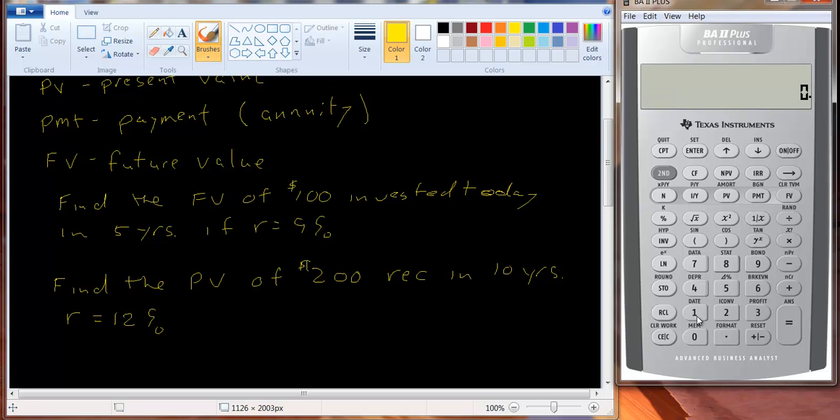Okay, so in this case, what do we know? We have a number of periods of 10. We have an interest rate of 12. We have a future value of 200. And we say compute present value. And so it's 64.39. Again, negative sign there. So if you put $64.39 in your bank account and it earns 12% a year, in 10 years it will be worth $200.